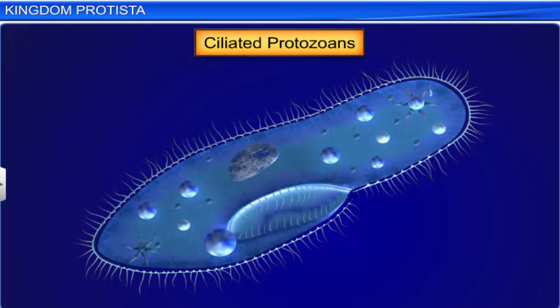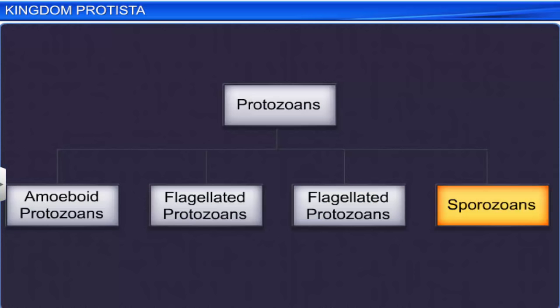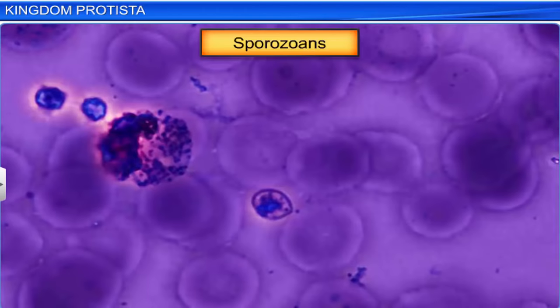Ciliated protozoans like Paramecium can be found in almost all places where there is water. Sporozoans are organisms that have an infectious spore-like stage in their life cycle.